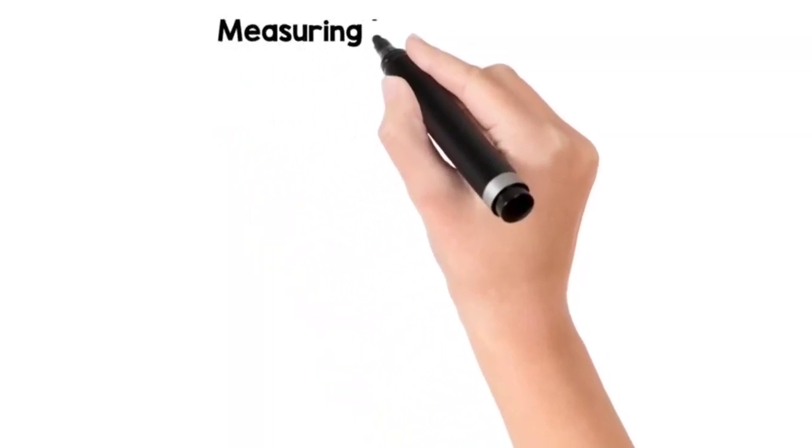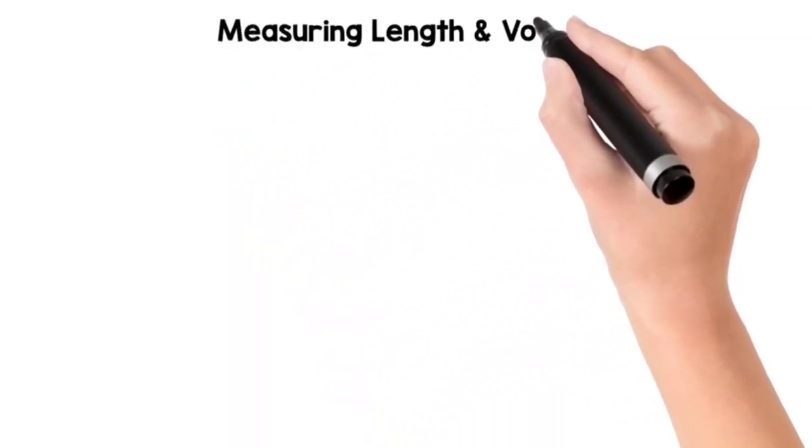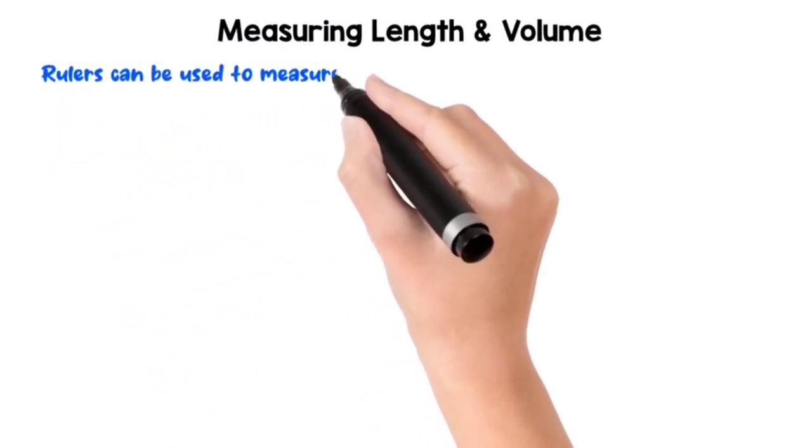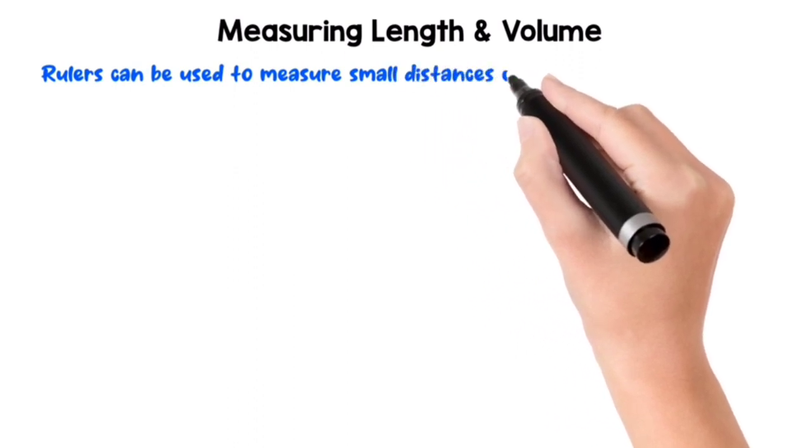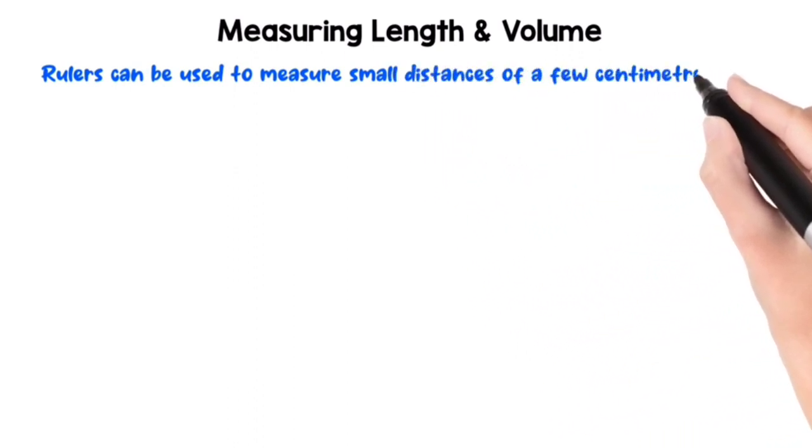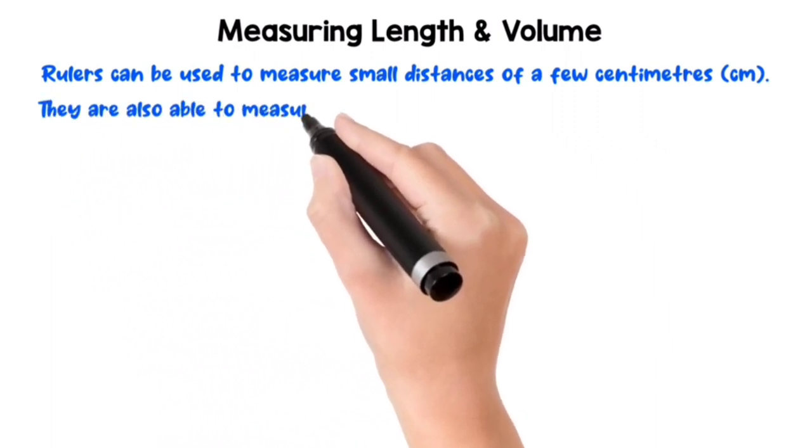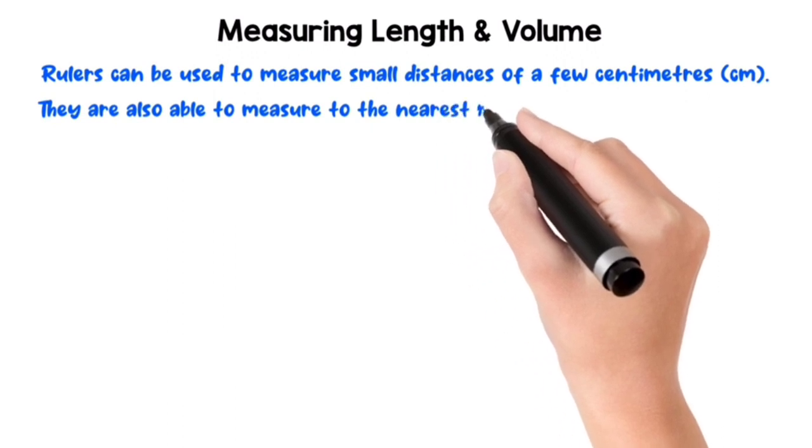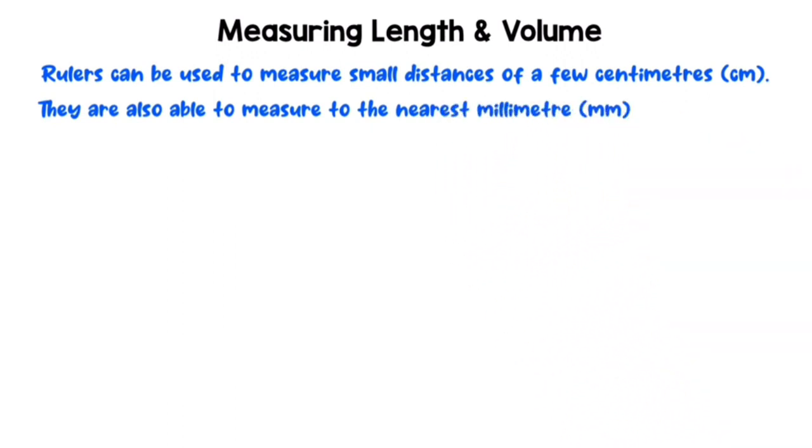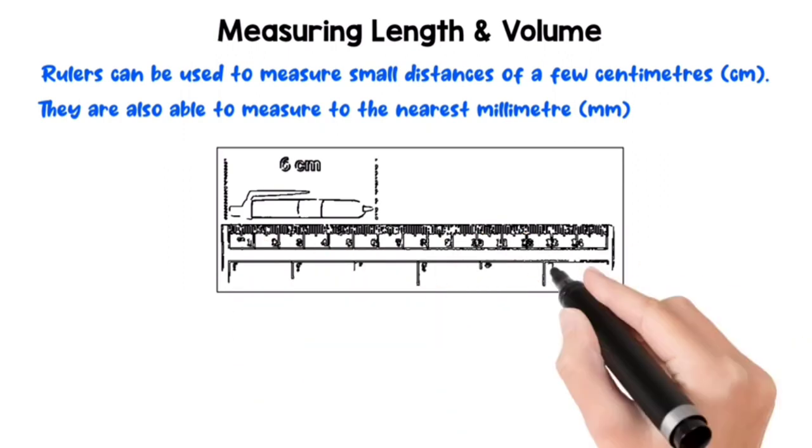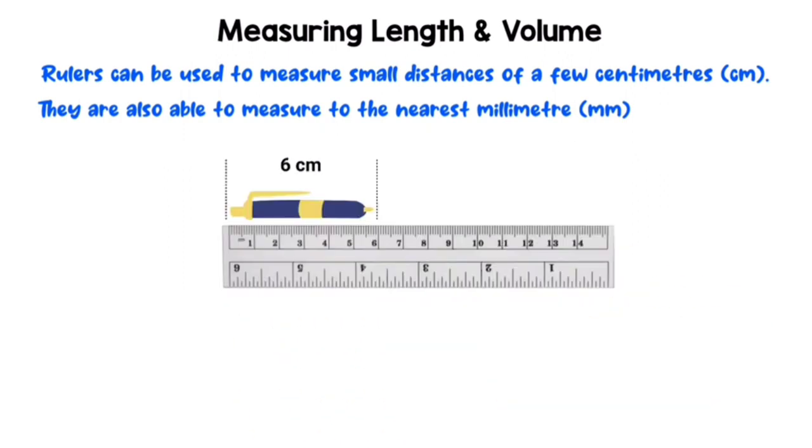Measuring Length and Volume. Rulers can be used to measure small distances of a few centimeters. They are also able to measure to the nearest millimeter. In this image, we can see that the length can be measured in centimeters or millimeters.